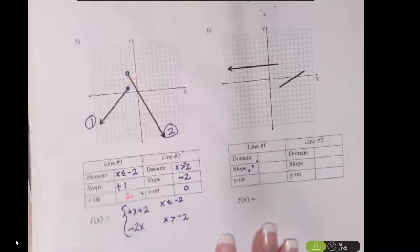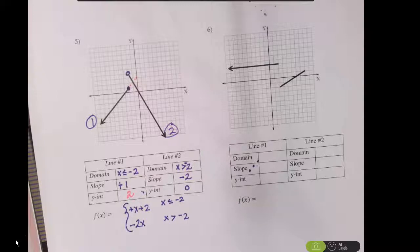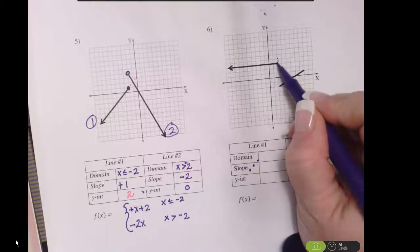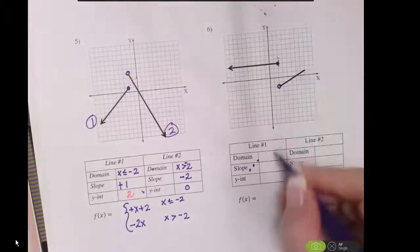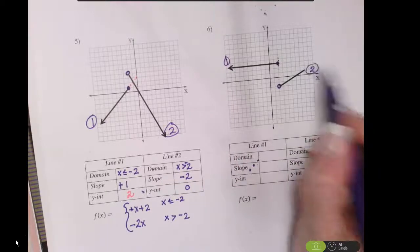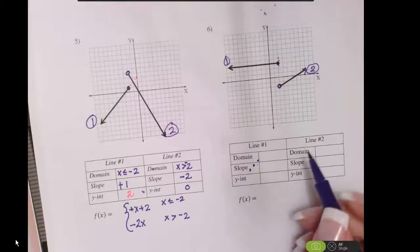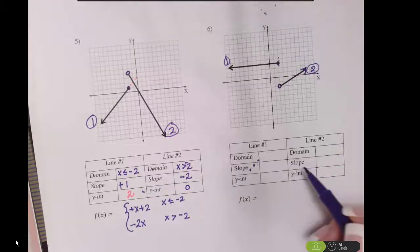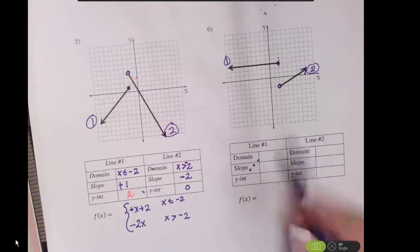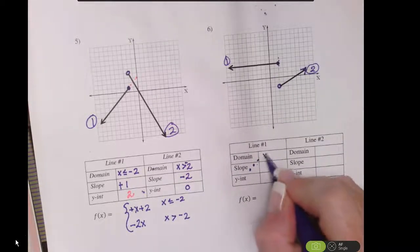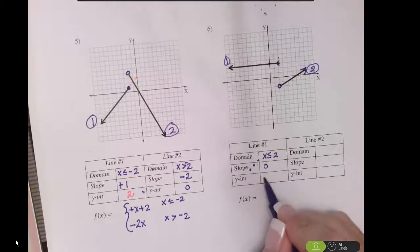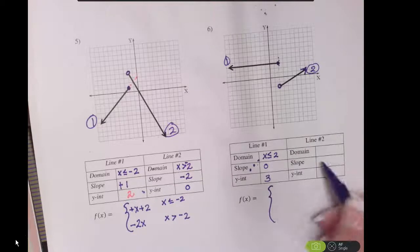Looking at example 6, I've got to go in and tell what my neighborhoods are. I can see that everything's cut off at x equals 2, and I'm going to put a closed circle there and an open circle there. For line 1, my domain is everything less than or equal to 2, the slope of that line is 0, and the intercept of that line is right there at y equals 3.